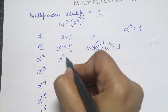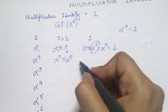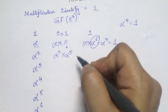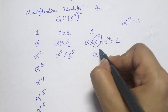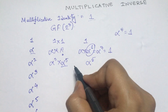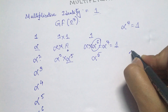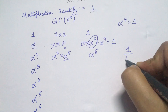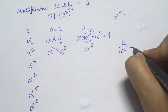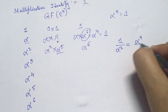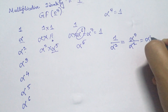Similarly, α² × α⁵ gives us α⁷ which equals 1. So α⁵ is the multiplicative inverse of α². We can also write it as 1/α² = α⁷/α² = α⁵.